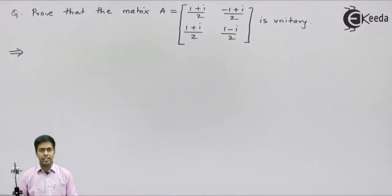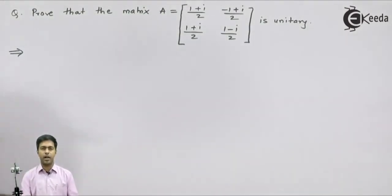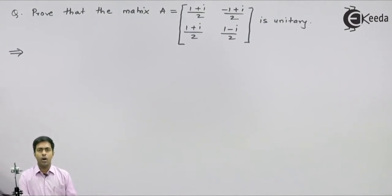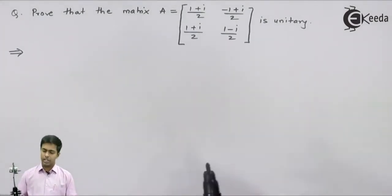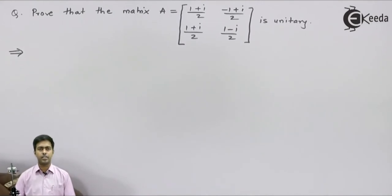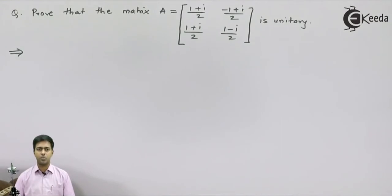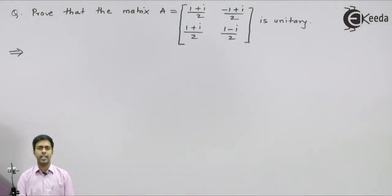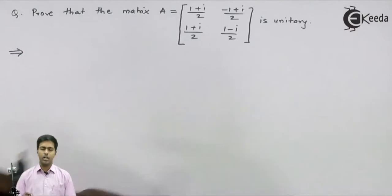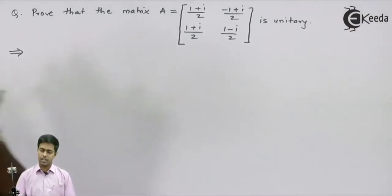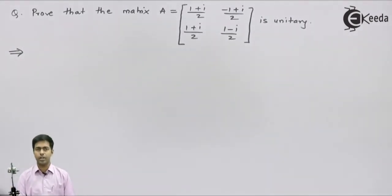Hi friends. In this problem, we have to prove that the matrix A is a unitary matrix. We all know the condition for a unitary matrix: the product of A and A-theta, that is the transpose conjugate of A, if it is equal to the identity matrix I, then we say the given matrix A is unitary. So here we will find that product, and if we get the identity matrix, it is proved that the given matrix is unitary.